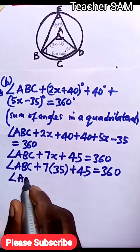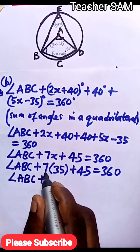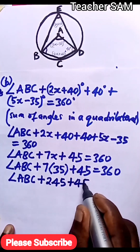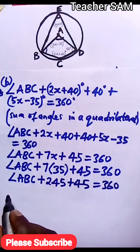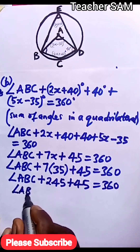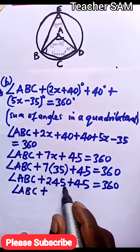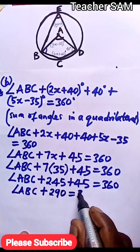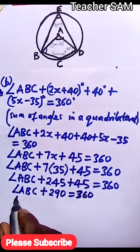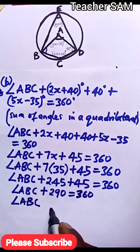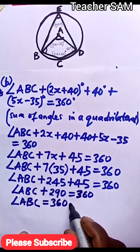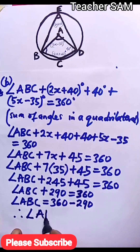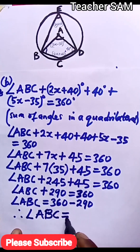We have angle ABC plus 245 plus 45 equals 360. So angle ABC plus 290 equals 360. Therefore, angle ABC equals 360 minus 290, which gives angle ABC equals 70 degrees.